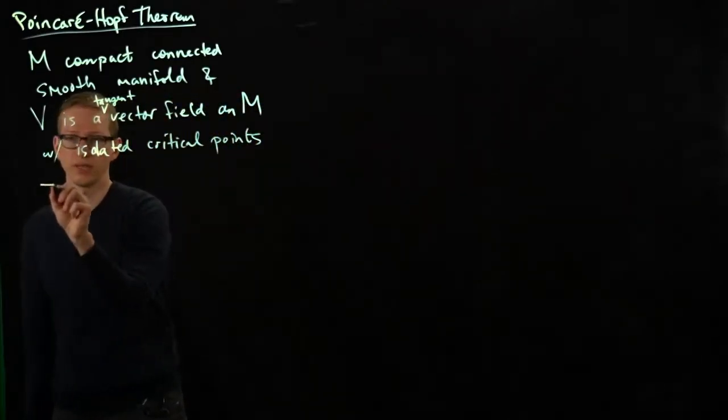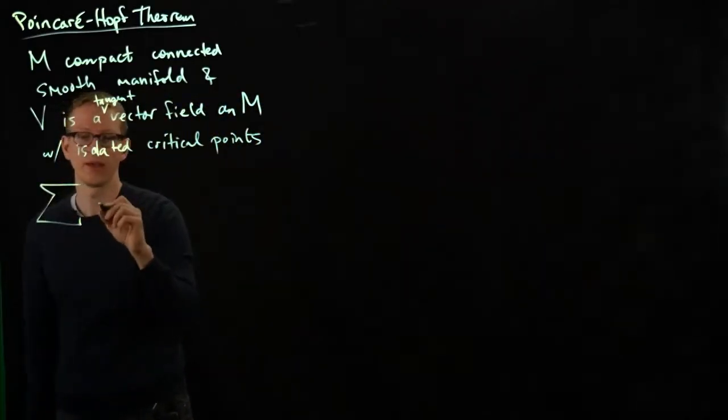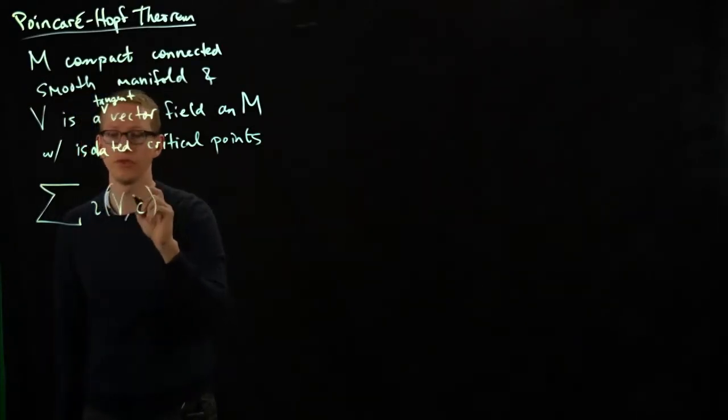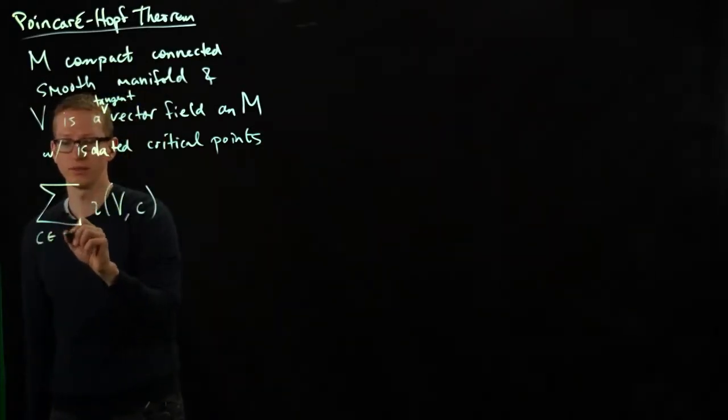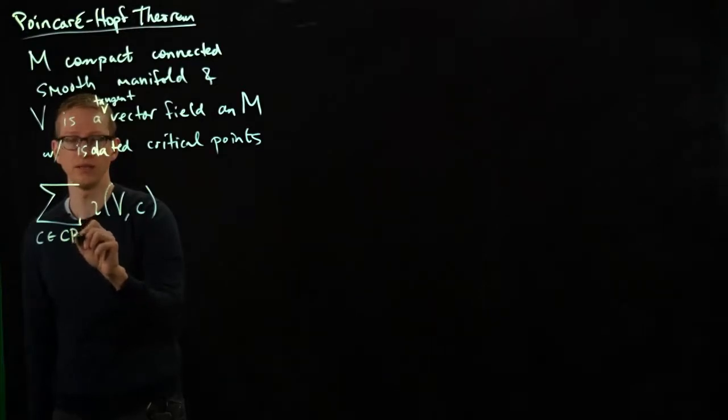then what we can do is calculate the sum of the indices of those isolated critical points. Let's call them CP, and they depend on the vector field V, so let's call them CPV.